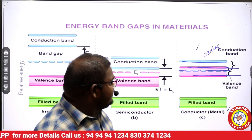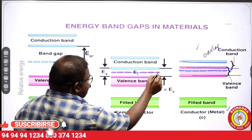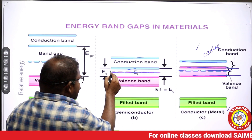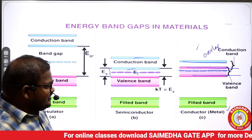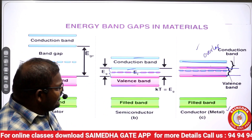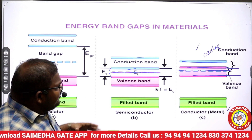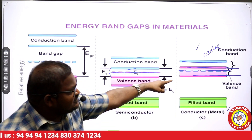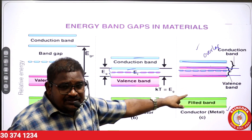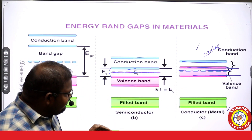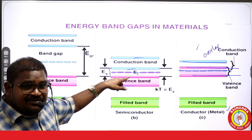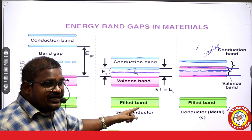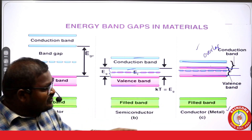For a semiconductor, there is a valency band and a conduction band with a very small energy gap between them. Whenever the temperature increases, this gap overlaps. That is the reason that under normal temperature the semiconductor acts as an insulator, but at high temperature, when the temperature increases, the semiconductor acts as a conductor.